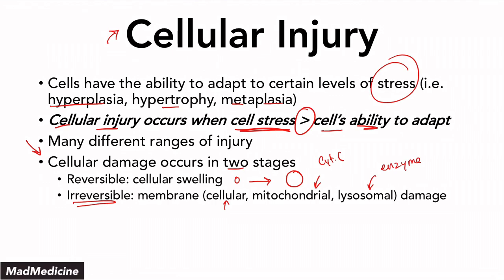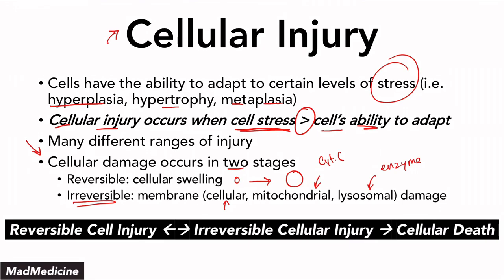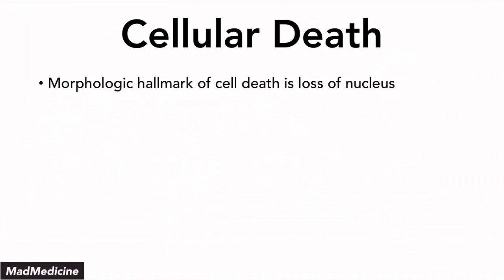We have discussed the pathology and mechanisms of how cellular injury leads to cellular damage in specific videos on our YouTube channel for both reversible and irreversible damage. The key thing to remember is: reversible cellular injury can be reversed, but when you reach the irreversible stage, you will only progress forward to cellular death. The morphologic hallmark of cellular death is the loss of the nucleus.